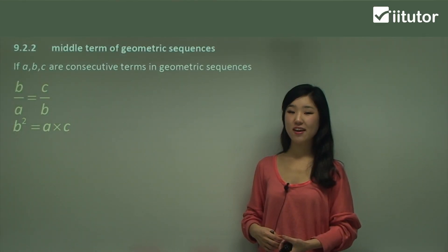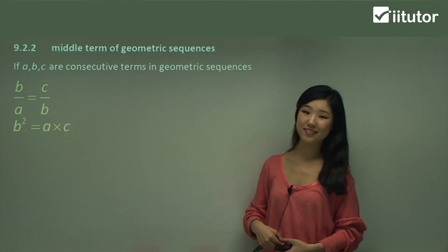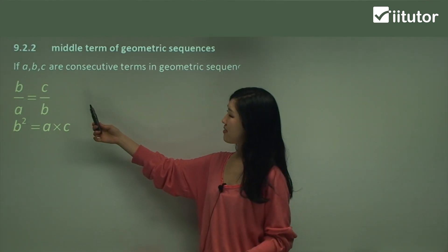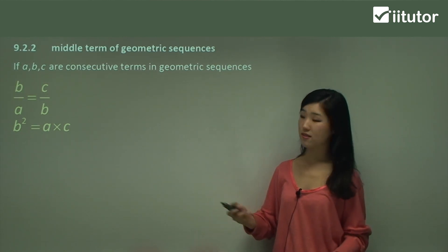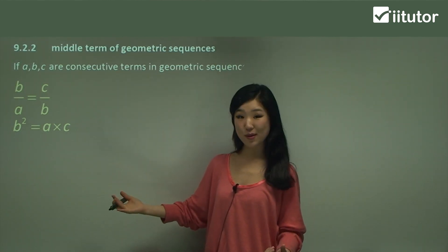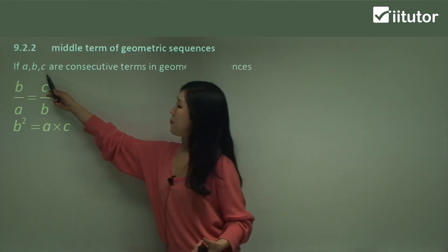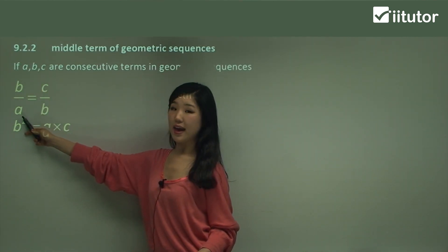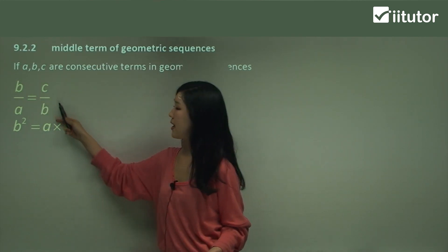Now I'm going to show you how to utilize the middle term of geometric sequences. Basically, if A, B, C are consecutive terms in a geometric sequence, then B, which is the middle term, divided by A is the same as C divided by B.